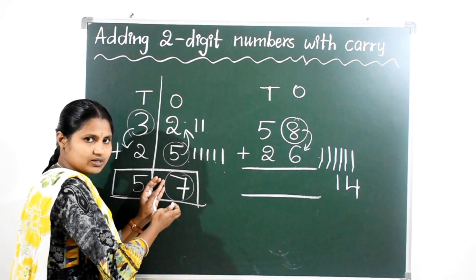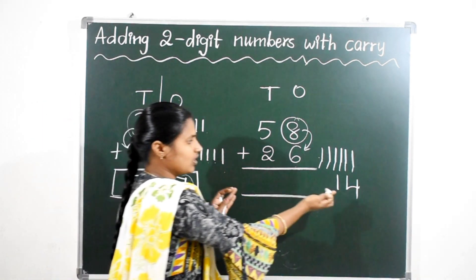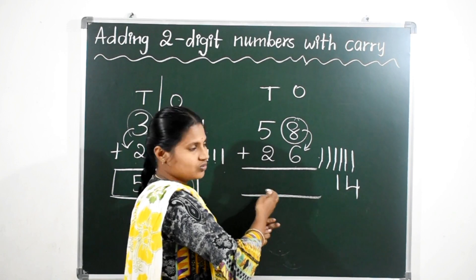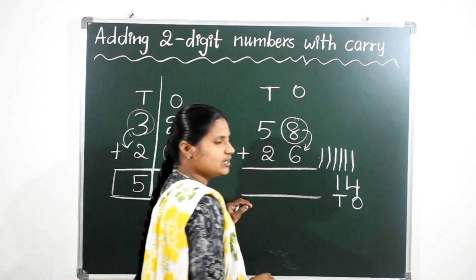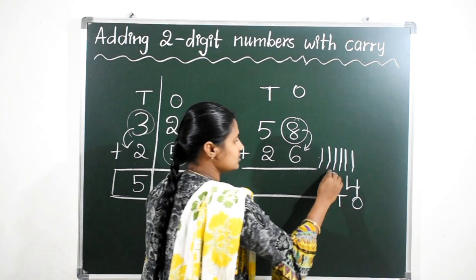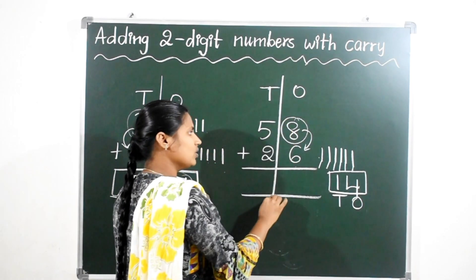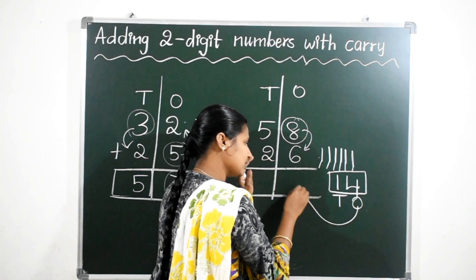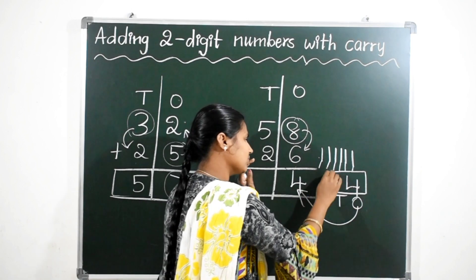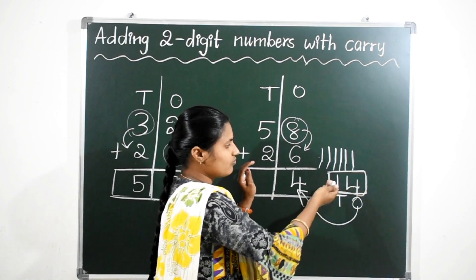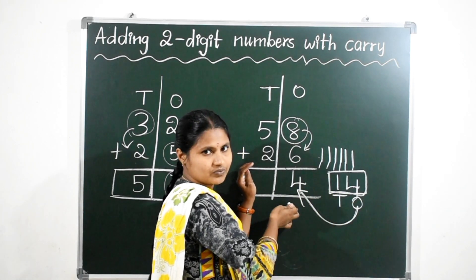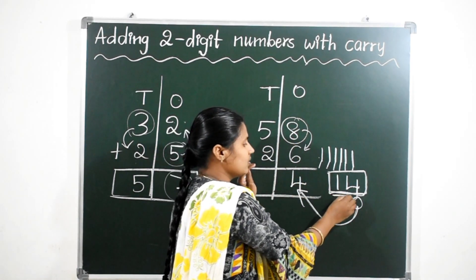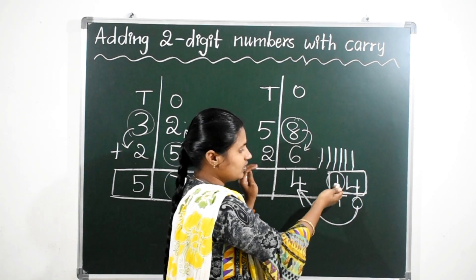See here, in the previous problem we got only a 1-digit answer in the 1s place — that was 7. Now here we got 14, which is a 2-digit number. So don't write 14 directly. 14 has a 1s place value and a 10s place value. Since we are adding only 1s place values here, take only the 1s place value — which is 4 — and write that in the 1s place only.